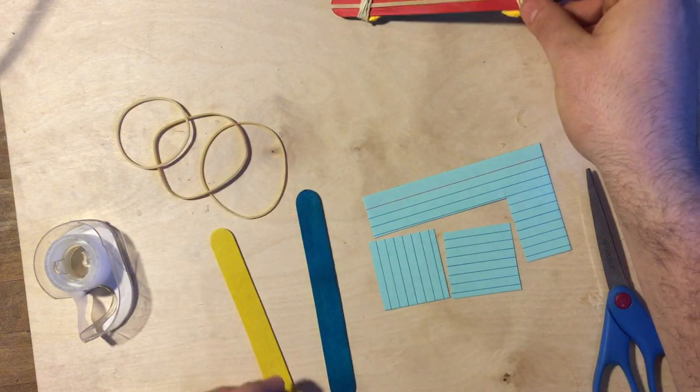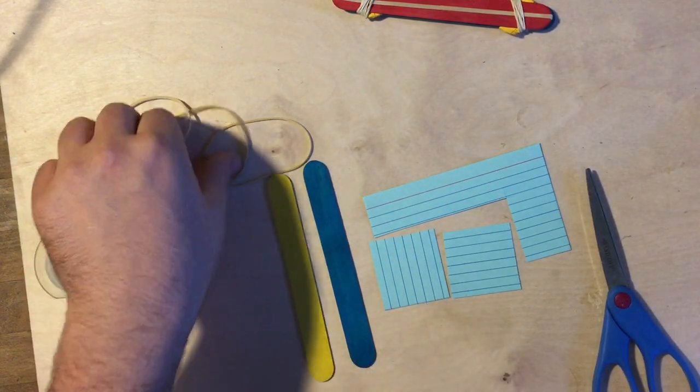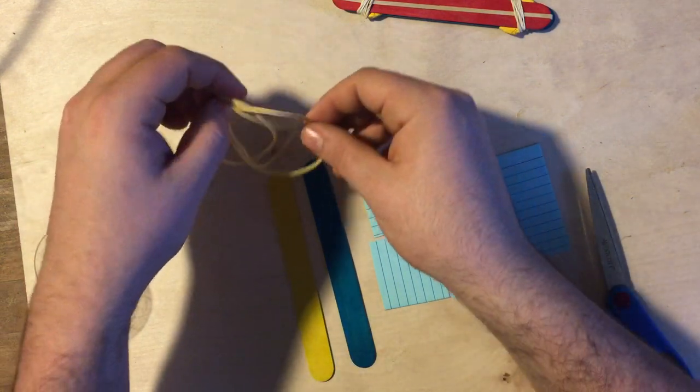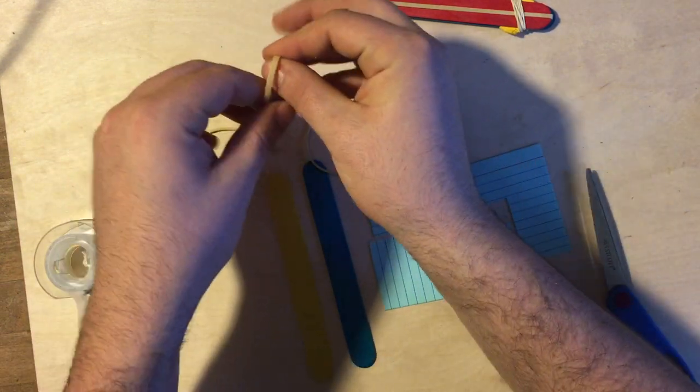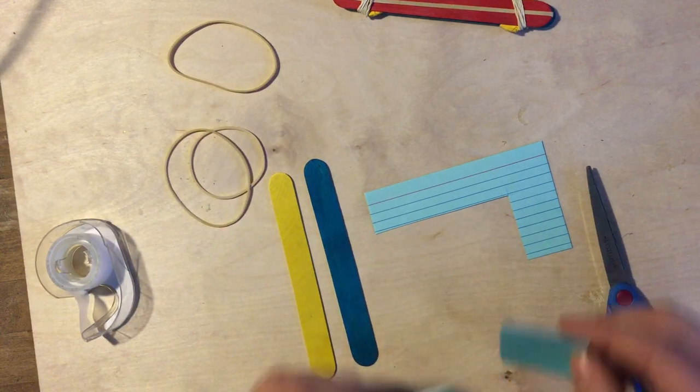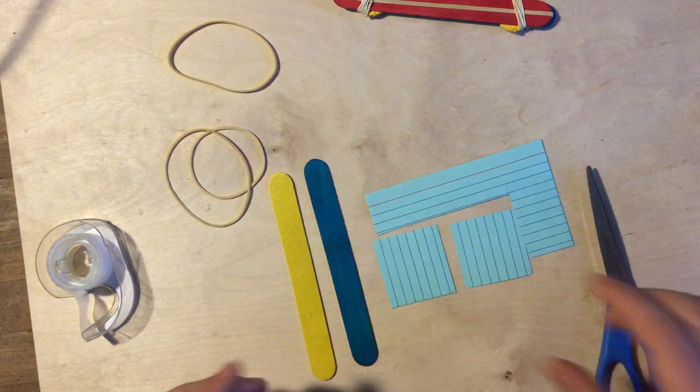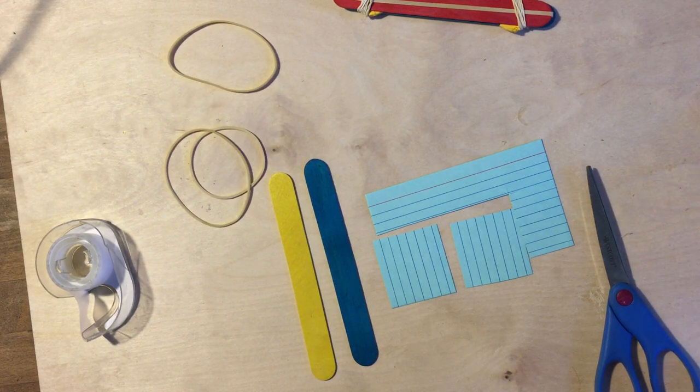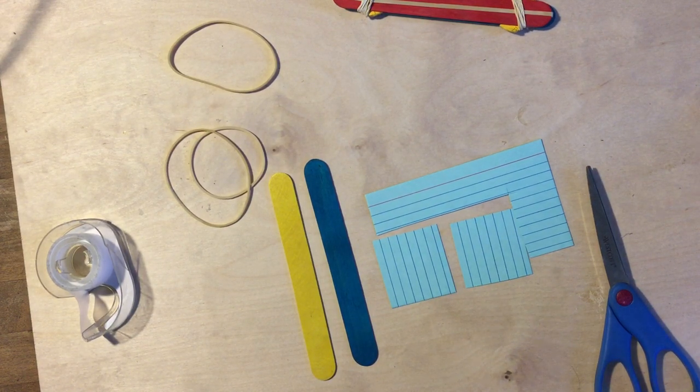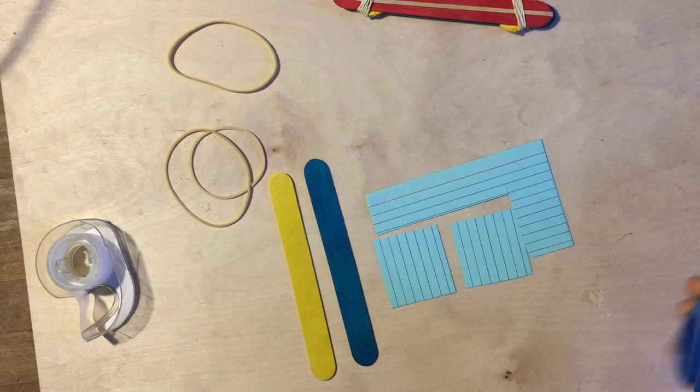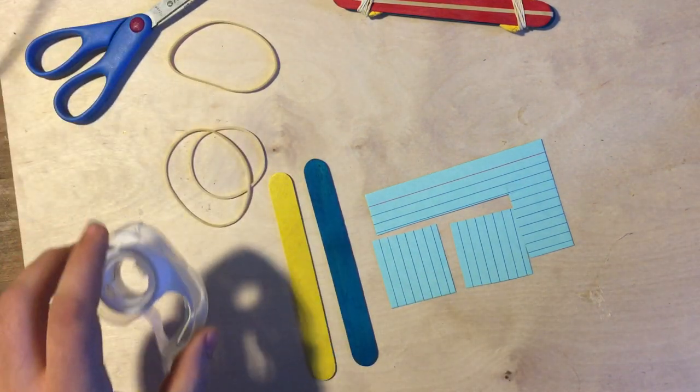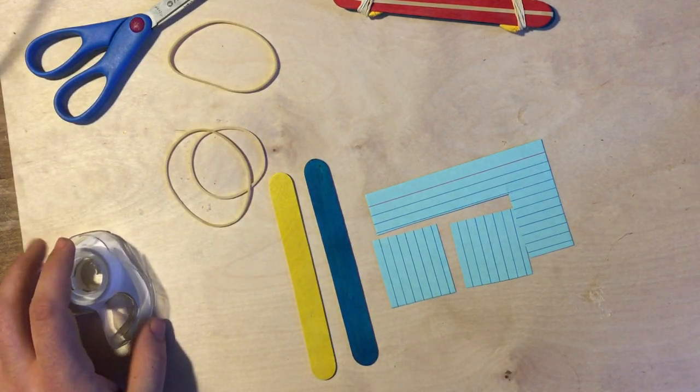For this build you need two Popsicle Sticks, three rubber bands and I'm using one that's a little bit thicker and two that are a little bit thinner. Then I'm using two squares of index card that I've cut out. They're about two inches by two inches but it's not super important that they're measured exactly. I don't need these scissors anymore but I used them to cut out my index cards. I'm going to use a little bit of scotch tape to hold some of this stuff together.